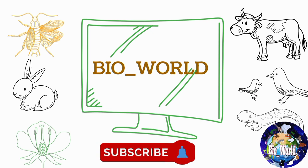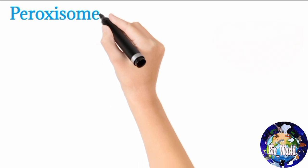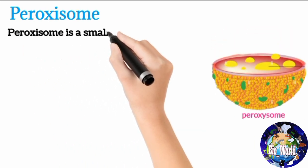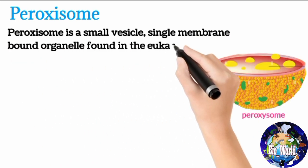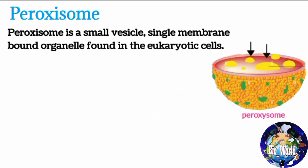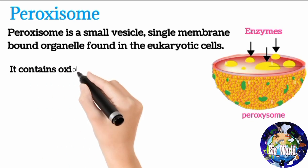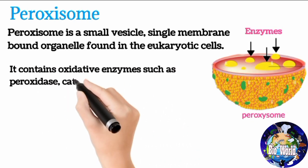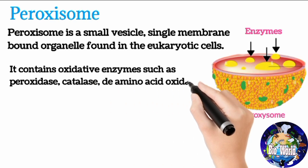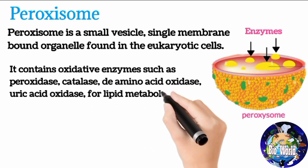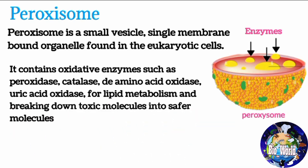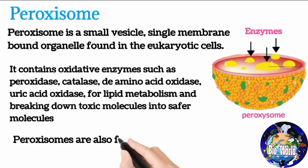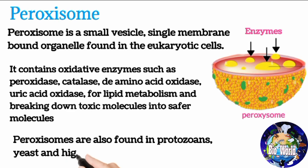What is a peroxisome? A peroxisome is a small vesicle, single membrane-bound organelle found in eukaryotic cells. It contains oxidative enzymes such as peroxidase, catalase, amino acid oxidase, and uric acid oxidase for lipid metabolism and breaking down toxic molecules into safer molecules. Peroxisomes are also found in protozoans, yeast, and higher plants.